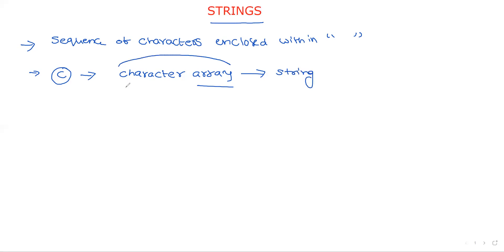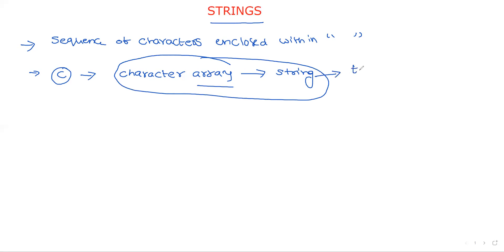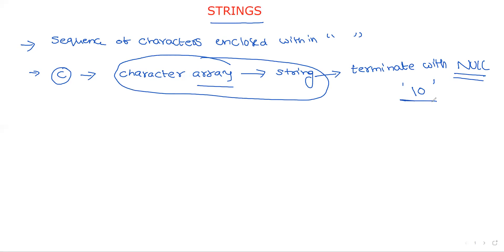A character array is called a string. Remember, each and every string must terminate with a null character. The representation of the null character is written within single quotation as backslash zero. This is the end of a string.